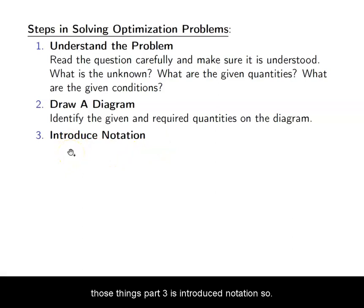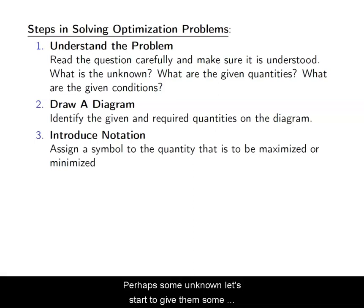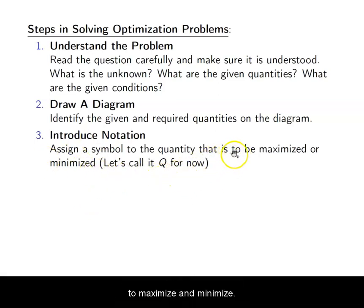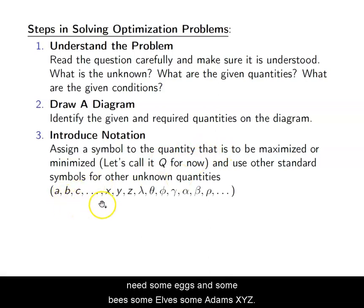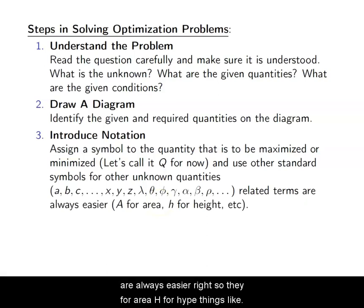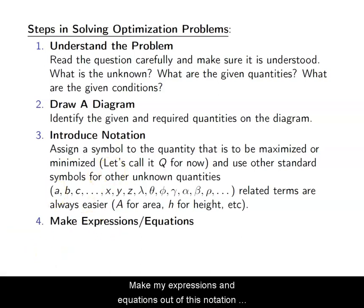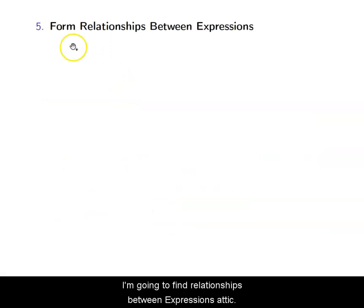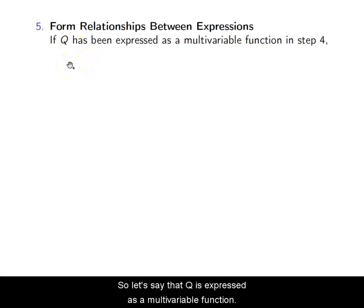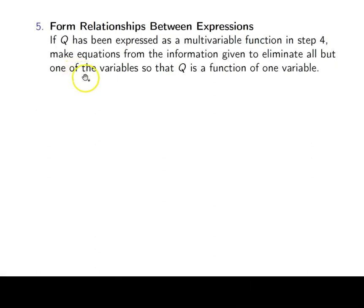Step two: draw a diagram. Identify where the given values from the problem are and label them. Step three: introduce notation. If you have unknowns, give them symbols. We can call Q the value we want to maximize or minimize. Use related terms when possible — A for area, H for height, things like that. Then make expressions and equations out of the notation you introduced. Try to express Q, the thing you want to maximize or minimize, in terms of those symbols.